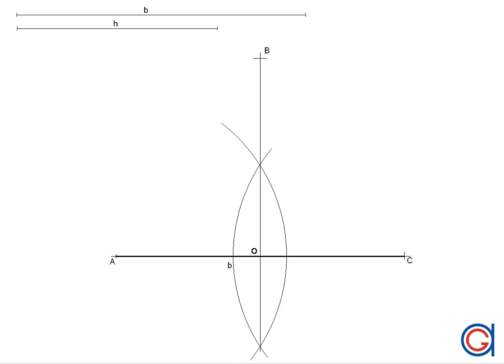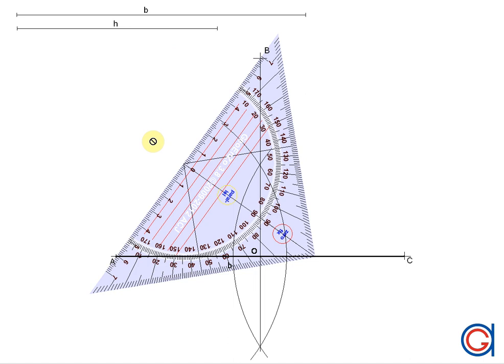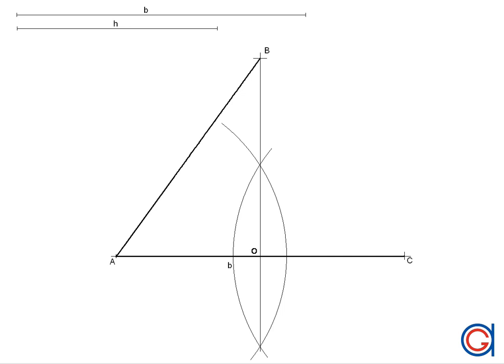Vertex B, okay. So the final step is to join vertex A to vertex B in a thicker line as can be seen here, and to complete our isosceles triangle we join vertex B to vertex C.